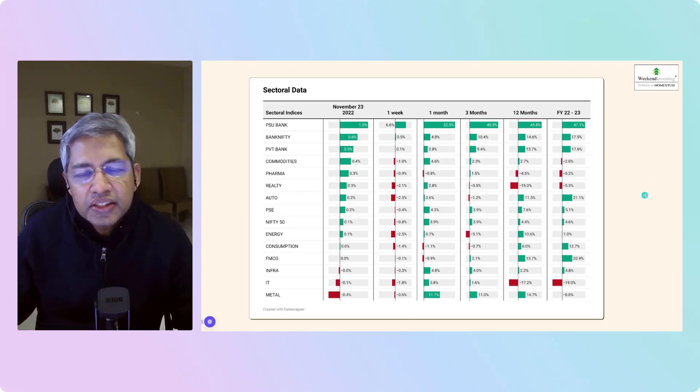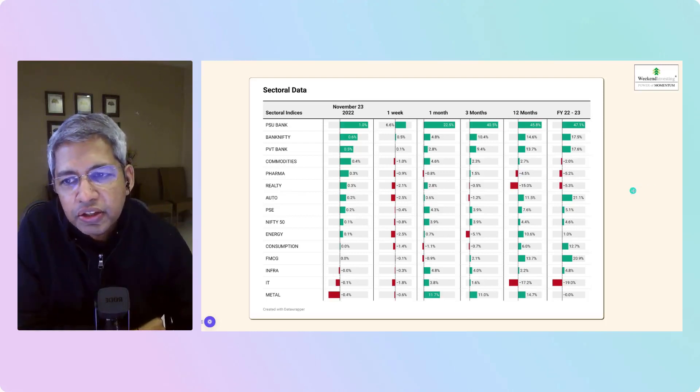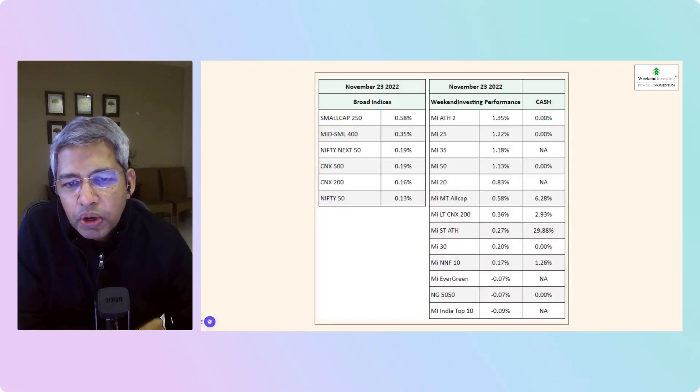Commodities, pharma, real estate, autos were mild gainers. Metals and IT stocks slumping again. The dollar index has started to raise its head again near about 107, and whenever that happens it becomes detrimental to the emerging market scenario.